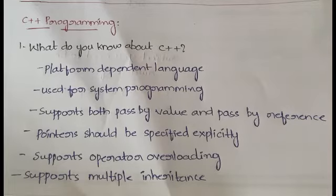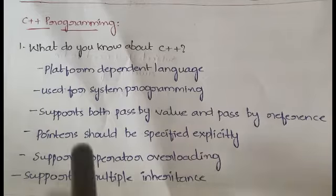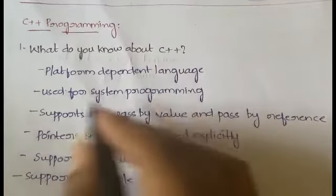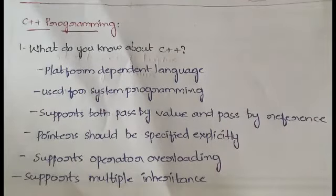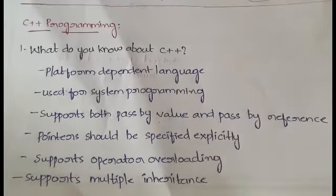The first question is: what do you know about C++? You can use this to explain about C++, or if asked about differences between C and C++, or C++ and Java. First, C++ is a platform-dependent language — it depends on the platform. It is used for system programming. It supports both pass-by-value and pass-by-reference, whereas some programming languages support only one of the two.